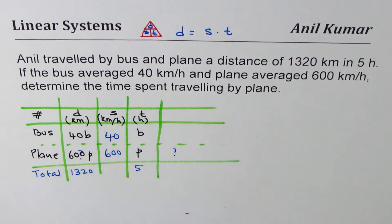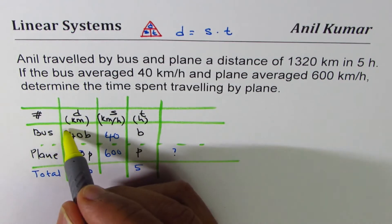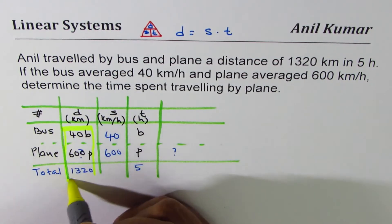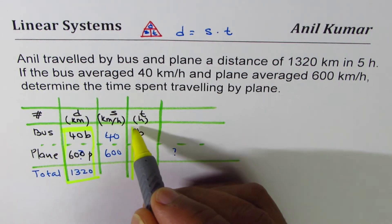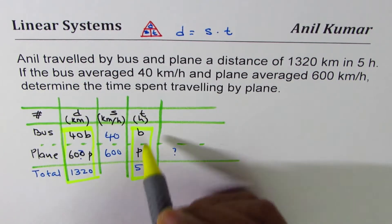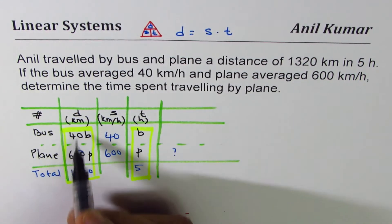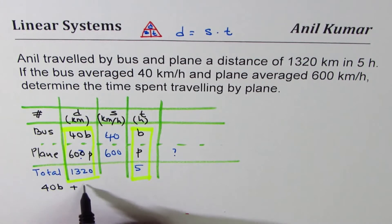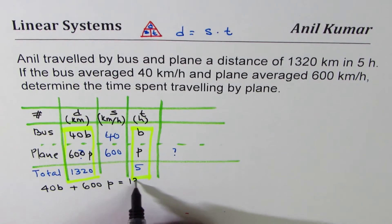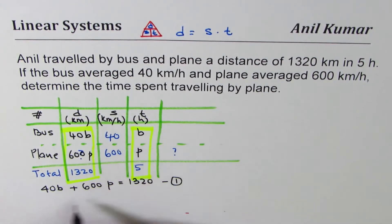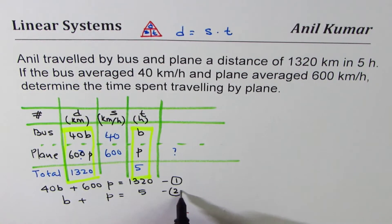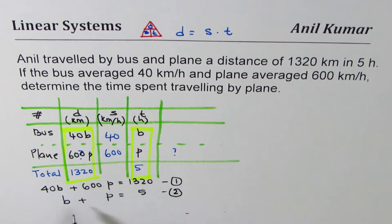From here we get two equations. One is regarding total distance: 40B plus 600P equals 1320 — we'll name this equation 1. The other one is total time: B plus P equals 5 — we'll call this equation 2. So we have two equations and two variables, and we can always solve these to find the value of both variables.